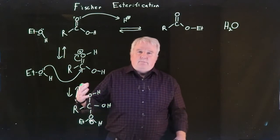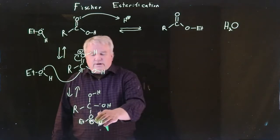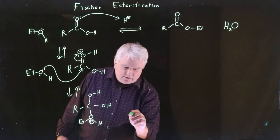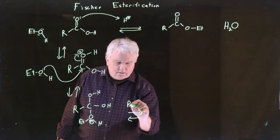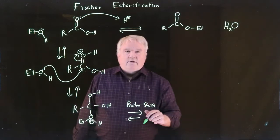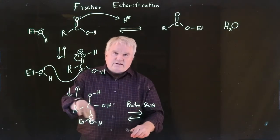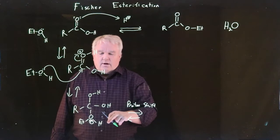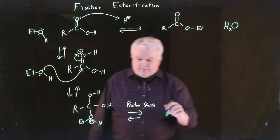As we've said before, something will come along and pull this proton off, and then it'll float around and put the proton on somewhere else. We're just going to represent that with our proton shift. Some base is going to come along and abstract this proton, it's going to float off, and then we would have that species which is neutral. Our acid will float around and protonate one of these other oxygen atoms.